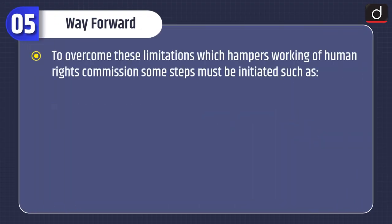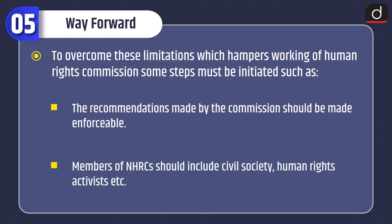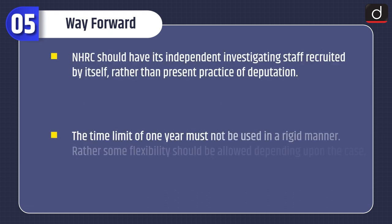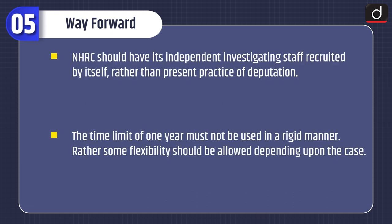To overcome these limitations which hamper the working of the Human Rights Commission, some steps must be initiated: the recommendations made by the Commission should be made enforceable; members of NHRC should include civil society, human rights activists, etc.; NHRC should have its own independent investigating staff recruited by itself rather than the present practice of deputation; and the time limit of one year must not be applied in a rigid manner — rather, some flexibility should be allowed depending upon the case.